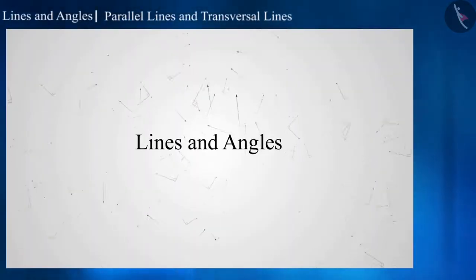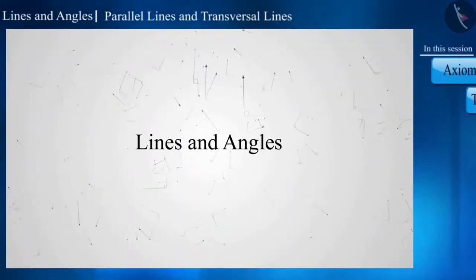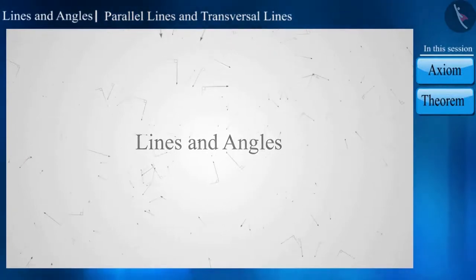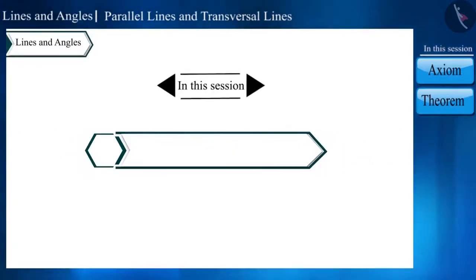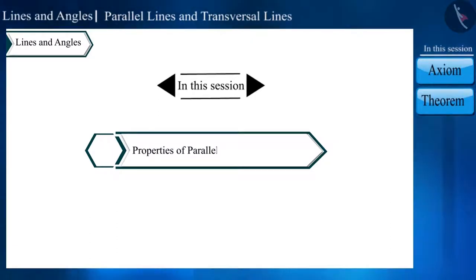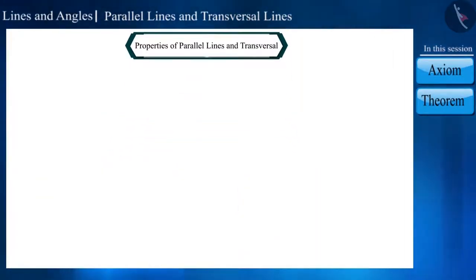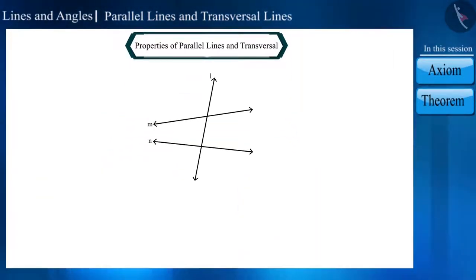Hello friends, welcome to this video on lines and angles. Today we will discuss the properties of parallel lines and transversal. We know that when two lines are intersected by a transversal, then different types of pairs of angles are formed.